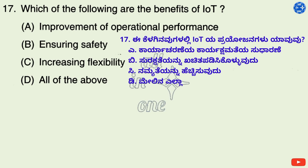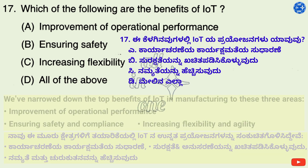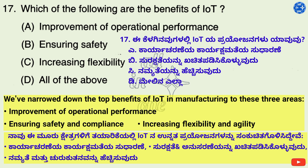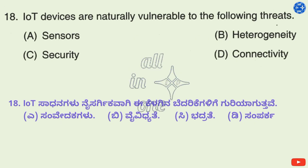Question 17. Which of the following are the benefits of IoT? Options: A. Improvement of operational performance, B. Ensuring safety, C. Increasing flexibility, D. All of the above. The top benefits of IoT in manufacturing are: 1. Improvement of operational performance, 2. Ensuring safety and compliance, 3. Increasing flexibility and agility. Therefore, right option is D: All of the above.